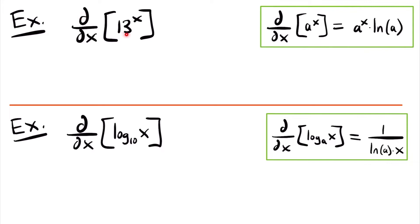We want to find the derivative of 13 to the power of x. This is an exponential function where the base is not e. To find the derivative of this function, we need to use this derivative rule: the derivative of the exponential function a to the power of x, where a is a positive real number, is equal to a to the power of x times the natural log of the base a.